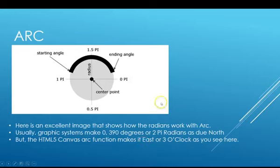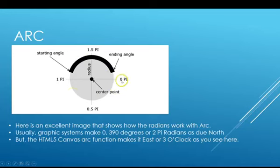This is a little strange because in most graphic systems the zero point is north, not east. But this is the way the HTML5 canvas does it, so you just have to remember that. The first value is an absolute one — where to start. The second value is where to go from there. If I start anywhere and go two pi radians, it'll do a complete circle.